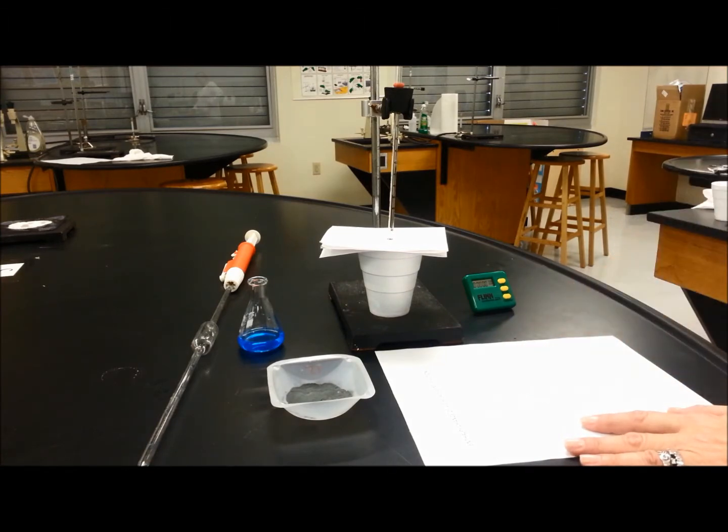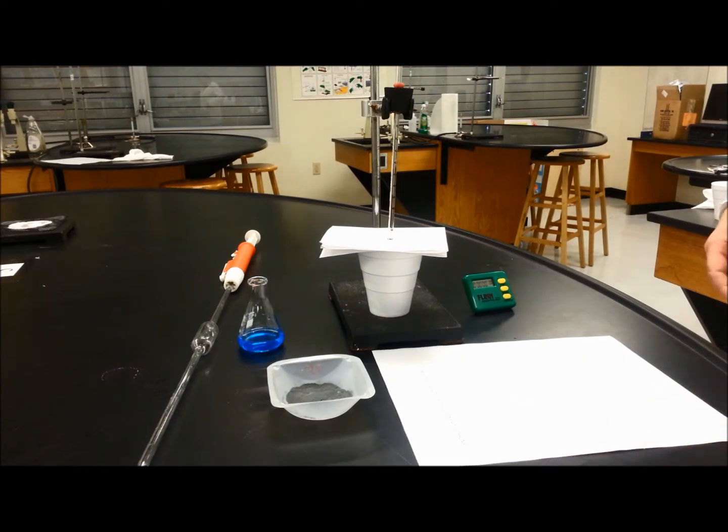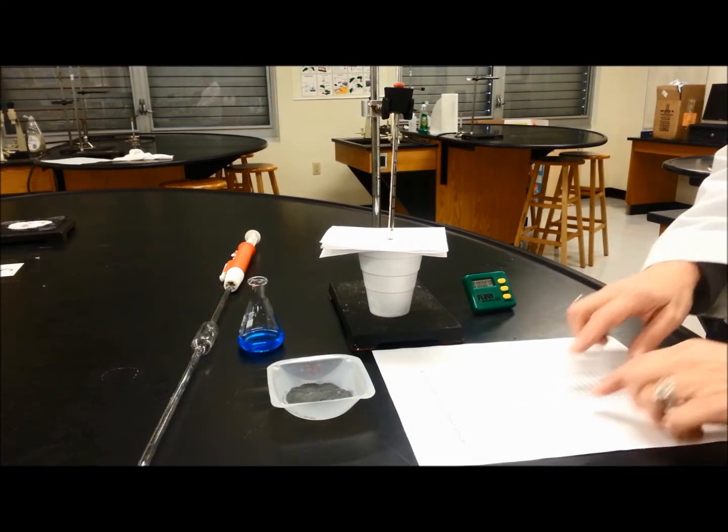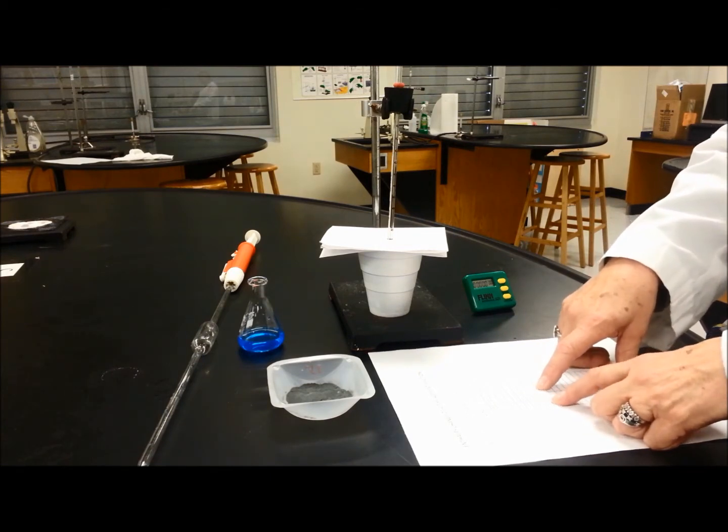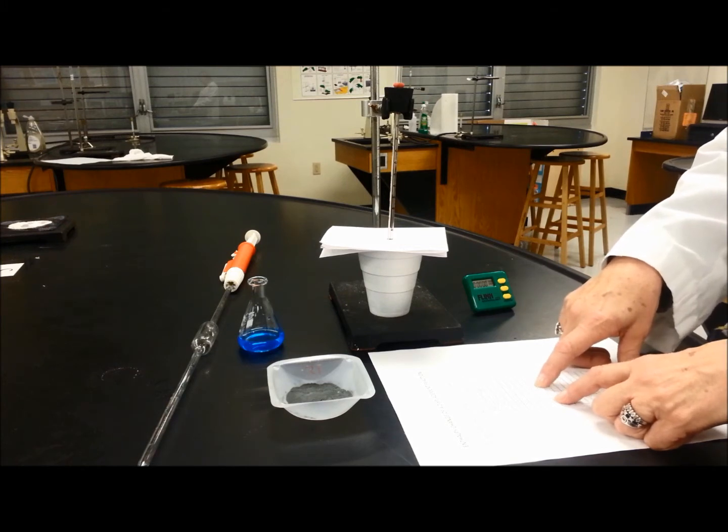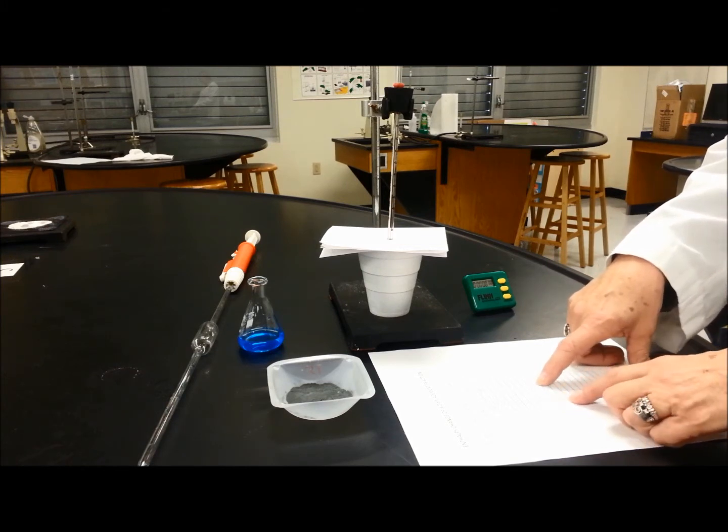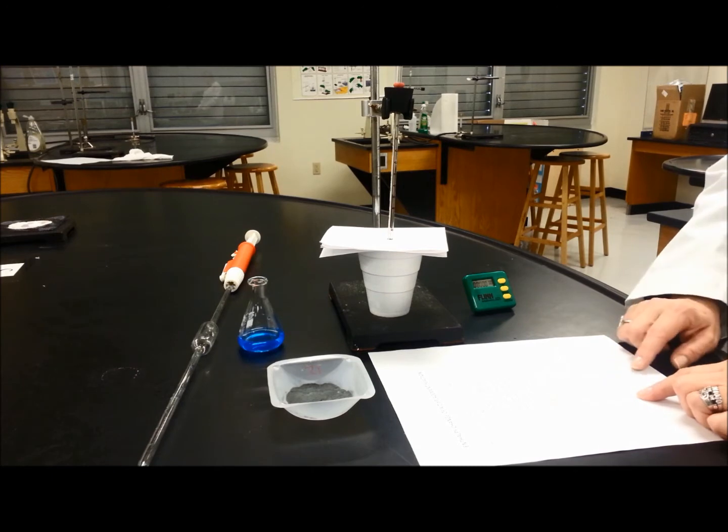When we get to three minutes, we do not record, but at three minutes exactly, we are going to put the powder zinc and then skip that measurement and then begin measuring again at 3.5 minutes and so on until nine minutes.